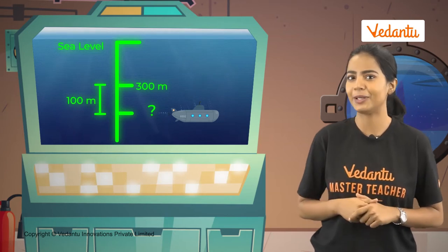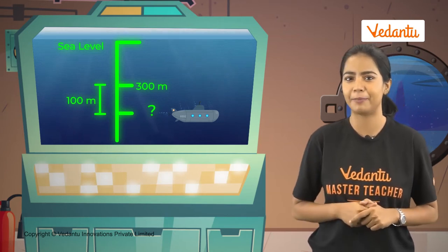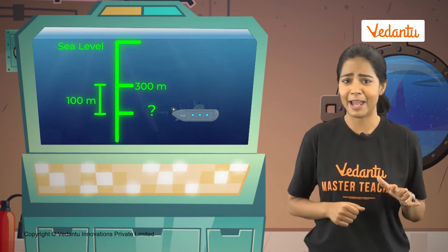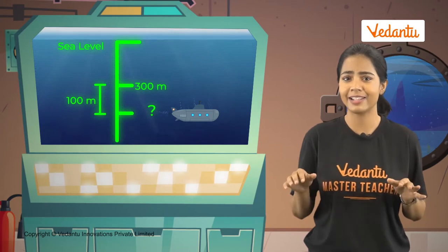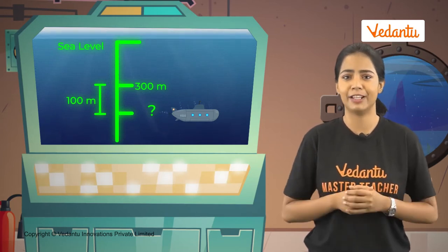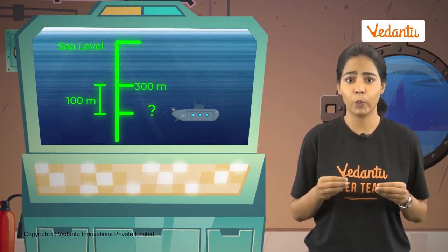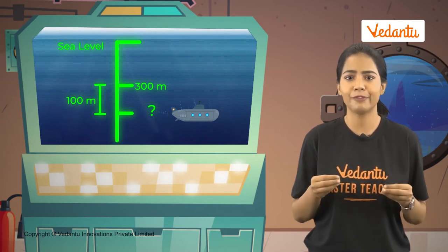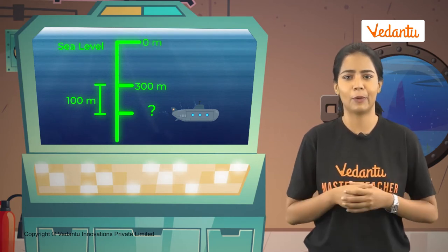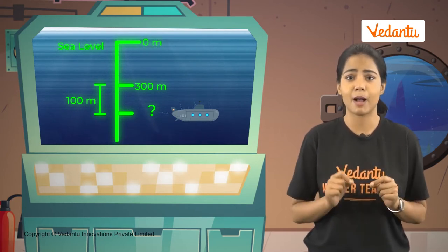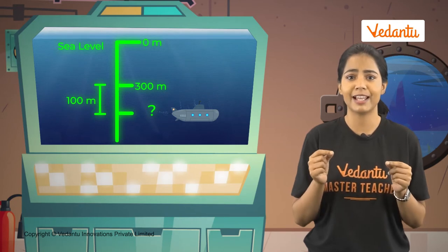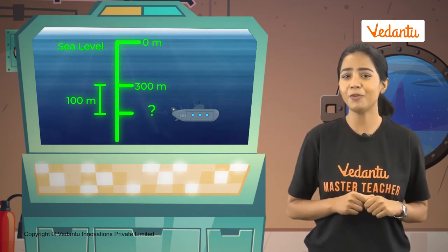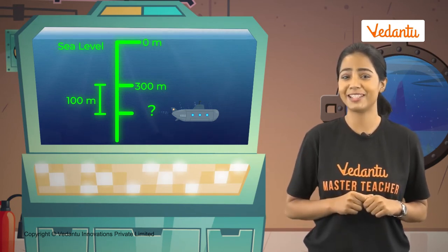How do we calculate the total depth? Depth and height are measured from sea level, so we can consider the sea level or the water surface as zero. If any distance above the sea level is measured as positive, then how will we measure the depth?